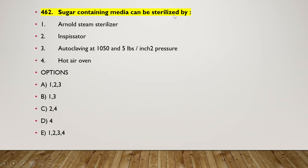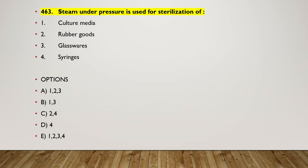The next question: sugar-containing media can be sterilized by Arnold steam sterilizer used in tyndallization, inspissator used in inspissation, autoclaving at 100–105°C and 5 lb/inch² pressure, or hot air oven. The right answer is option B — one and three — Arnold steam sterilizer and autoclaving are used for sugar-containing media.